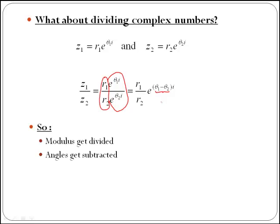In conclusion, you can say that when you divide complex numbers given in exponential form or in polar form, what happens is that the final modulus is the division of the two, and the final angle is the subtraction of the two.